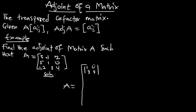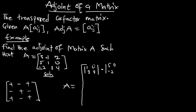For the second element we compare it to the sign notation — plus, negative, plus, negative — so the second element is negative. Removing the appropriate row and column gives us: 5, 0; negative 2, 4. For the third element, which is positive, we get: 5, 1; negative 2, 3.